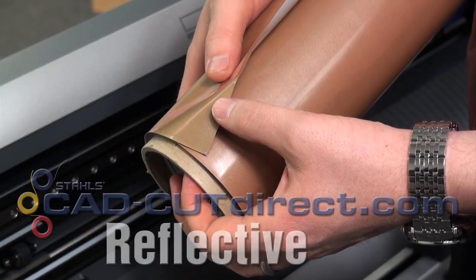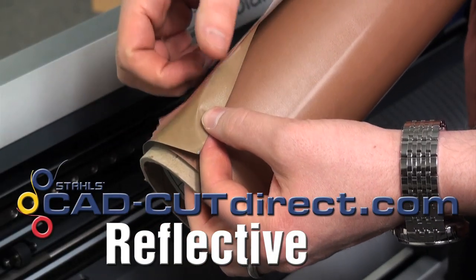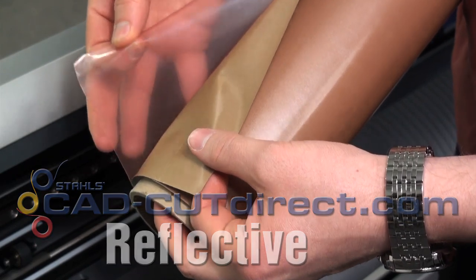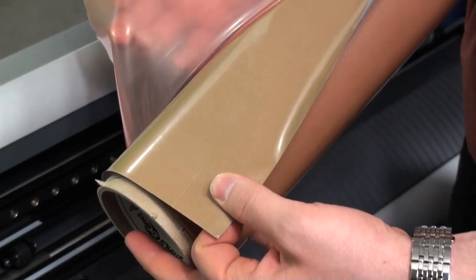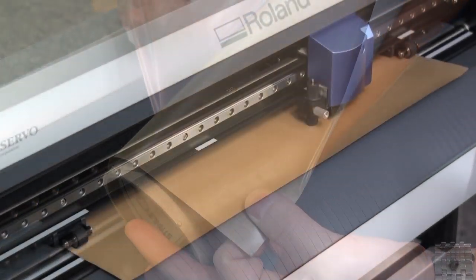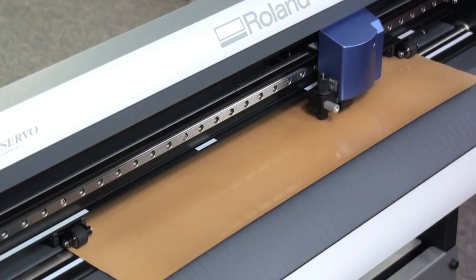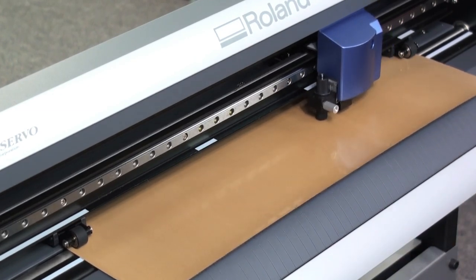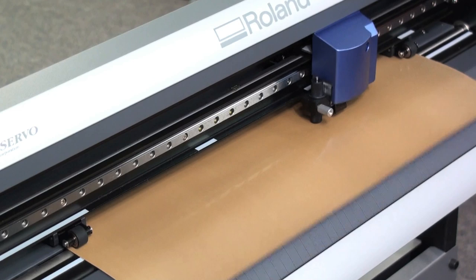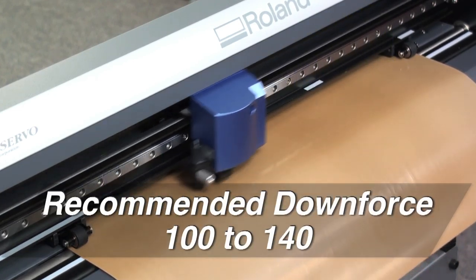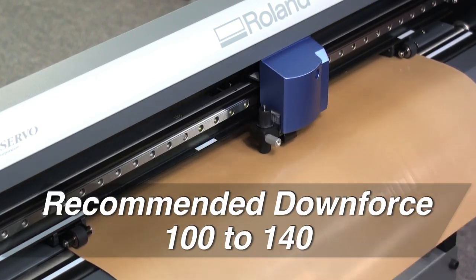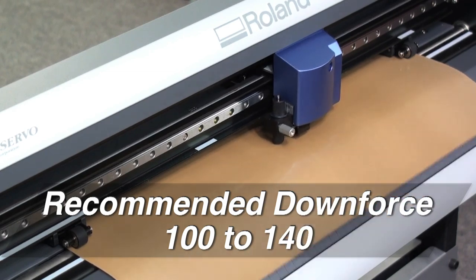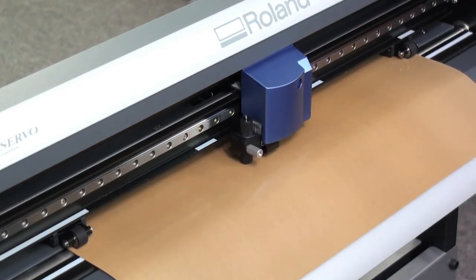The first product that we'll cut is the CAD-CUT reflective. Before cutting, you must peel back the pink liner that's protecting the adhesive. When cutting CAD-CUT reflective, be sure to set your blade depth and cutting down force accordingly. On a scale of 0 to 250 grams on the GX24 cutter, you'll need between 100 and 140 grams.